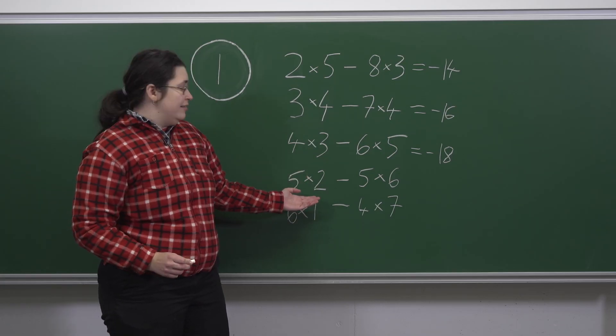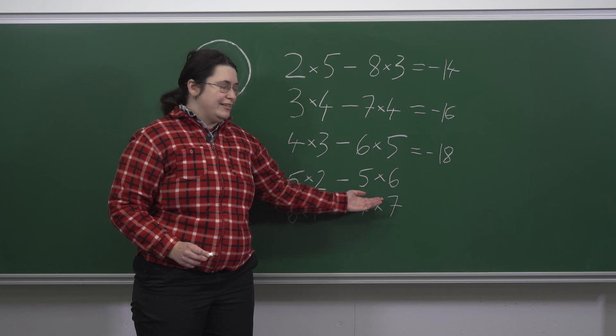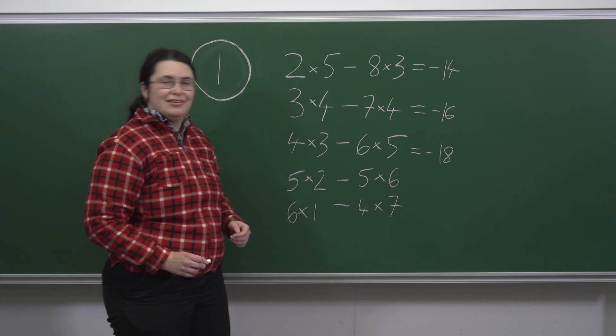5 times 2 is 10, 5 times 6 is 30, 10 minus 30 is minus 20.